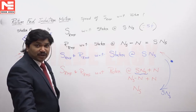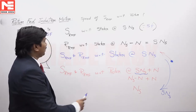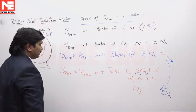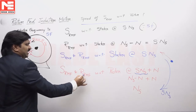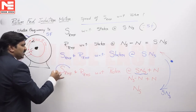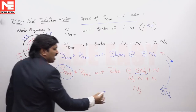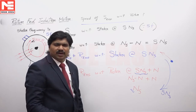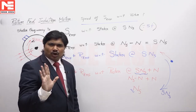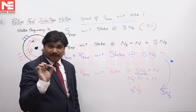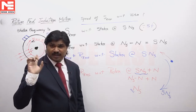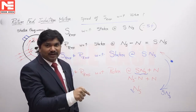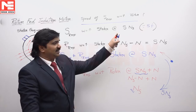The speed of the stator magnetic field with respect to the rotor — in fact, anything, whether stator magnetic field or rotor magnetic field, with respect to the rotor in a rotor-fed induction motor — the answer should be NS. Remember this simple rule: stator magnetic field and rotor magnetic field with respect to the rotor in a rotor-fed motor will be at SNS, and with respect to the stator will also be at SNS.